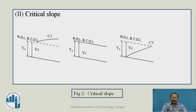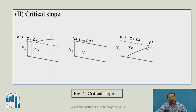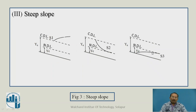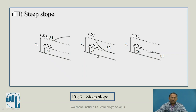For critical slope, when Y is above the NDL/CDL line, Y > Yn = Yc, giving C1 profile. C2 does not exist as zone 2 does not exist. When Yn or Yc > Y, it is C3 type. For steep slope, since Yc > Yn, zone 1 gives Y > Yc > Yn (S1), zone 2 gives Yc > Y > Yn (S2), and zone 3 gives Yc > Yn > Y (S3).